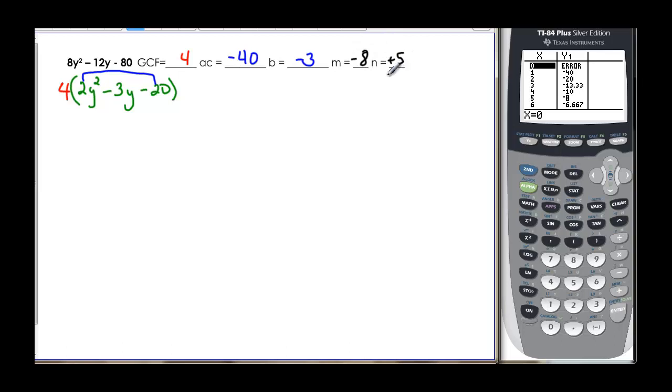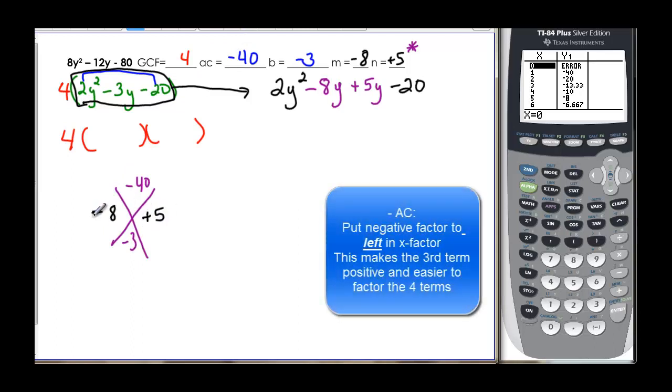And the reason why I wrote negative 8 first is because it makes it nice for that third term. If you write your negative first all the time. Now we have to take this polynomial and find our solution from the rest of the factors from that. So we still have our 4. But we've got to find our 2 binomials. And we're going to work on this polynomial. So we have 2y squared and negative 20 that we're going to put in here. And then we're going to add the middle to be that minus 8 and y and positive 5y. Remember we were down here negative 40 and we had a negative 3. Always put your negative to the left. If you have opposite signs especially, put your negative to the left. That will make your third term a positive and it's much easier to factor.